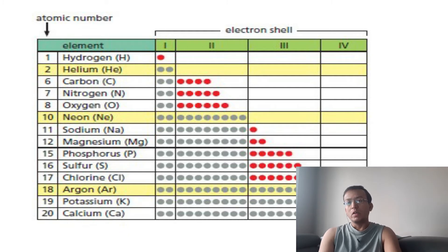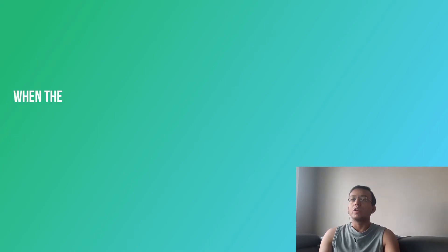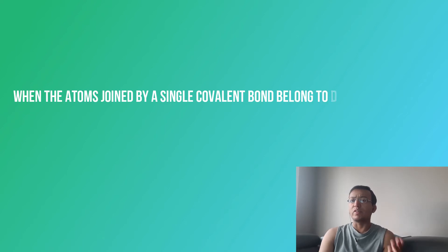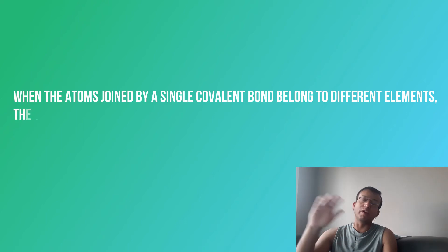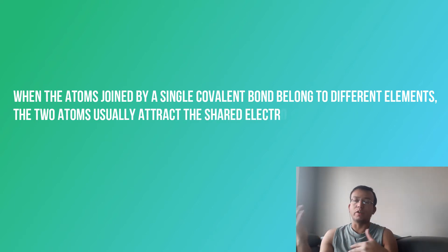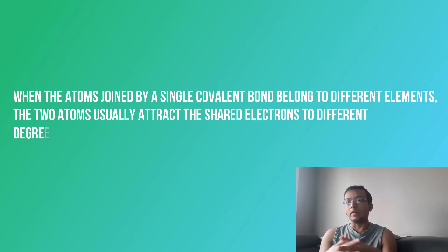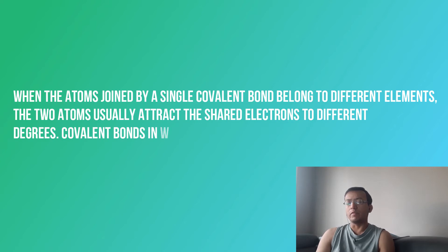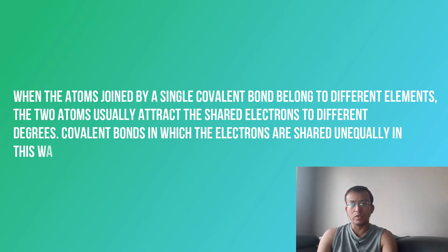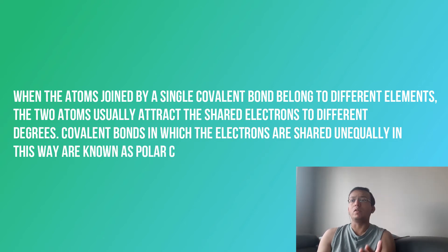When atoms joined by a single covalent bond belong to different elements, the two atoms attract the shared electrons to different degrees. Covalent bonds in which electrons are shared unequally are known as polar covalent bonds. For example, if one atom has two electrons and another has three, they don't share equally — one shares more than the other — creating a positive and a negative end.